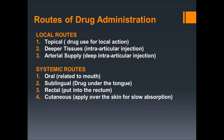Fourth is cutaneous — applied over the skin for slow absorption. For example, bio patches for pain are used over the skin, basically on the shoulders or back, for slow absorption of the drug.